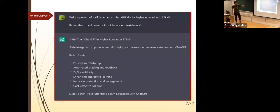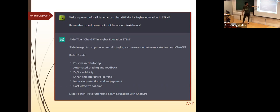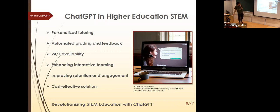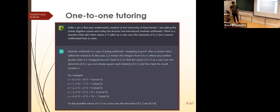First example: I asked ChatGPT to write a PowerPoint slide on what ChatGPT can do for higher education in STEM. It produced a title, image placeholder, bullet points, and a footer. For the picture I used another AI called Midjourney. ChatGPT is quite ambitious about what it claims to do — for instance, the first bullet point is personalized tutoring.